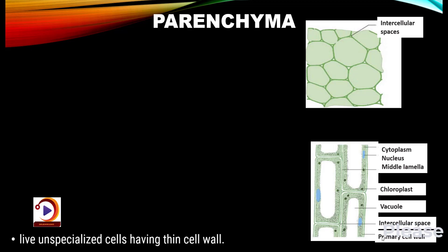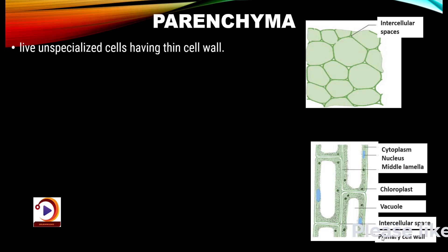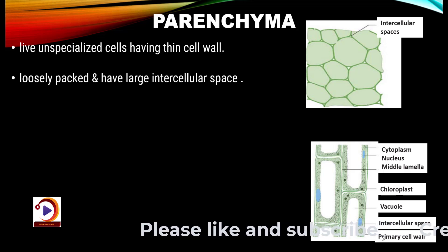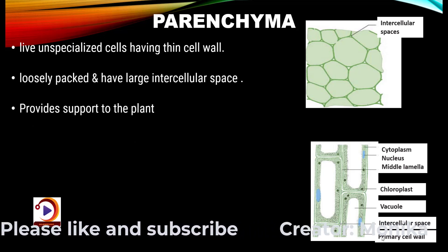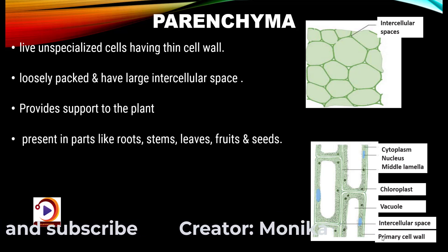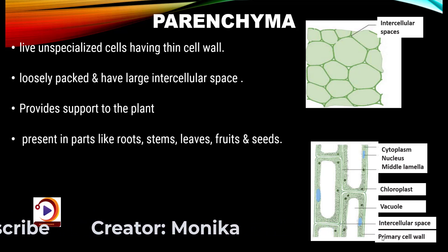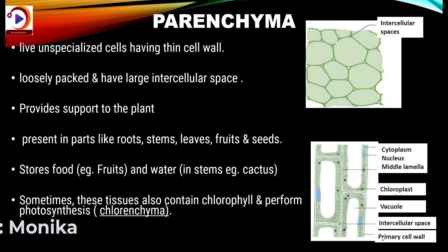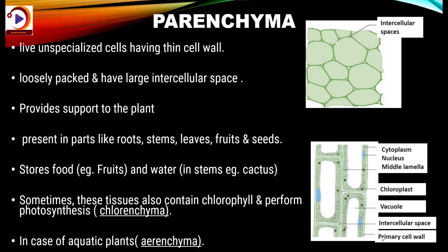The first simple permanent tissue is parenchyma. They consist of live, unspecialized cells having thin cell walls. They are loosely packed and have large intercellular space. They provide support to plants and are present in all parts like root, stem, leaves, fruit and seeds. They help in storage of food and water. Sometimes these tissues also contain chlorophyll and perform photosynthesis — at that time they are known as chlorenchyma. In aquatic plants, parenchyma is modified into aerenchyma, which helps the aquatic plants to float.